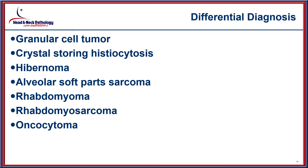However, limiting to those things that occur primarily in the oral cavity, the differential includes: granular cell tumor, crystal storing histiocytosis, hibernoma, alveolar soft part sarcoma, rhabdomyoma, rhabdomyosarcoma, and oncocytoma — all of which really need to be considered within this particular setting.